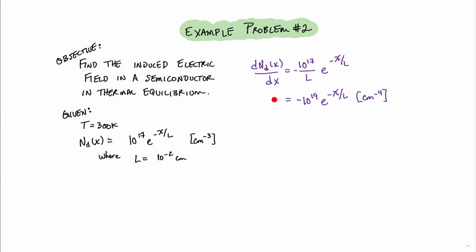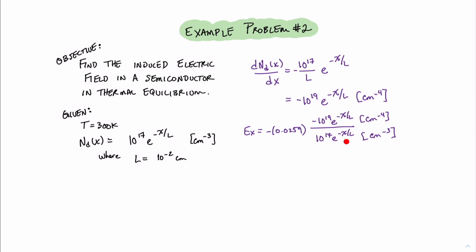Now that we have the derivative, we can plug this value into the full equation for the electric field. We'll find that the electric field is equal to the thermal voltage 0.0259 volts, times minus 10^19 e^(-x/L) in per centimeters to the fourth, divided by our original equation for N_d(x), which is 10^17 e^(-x/L) in per cubic centimeters. Looking at this equation, the two negatives cancel, and the units will be in volts per centimeter. We can also see that e^(-x/L) appears in both numerator and denominator and cancels. And 10^19 over 10^17 is simply 10^2. Therefore, our result is a constant electric field with a value of 2.59 volts per centimeter.